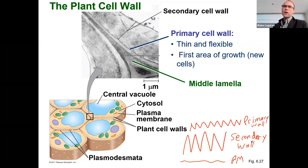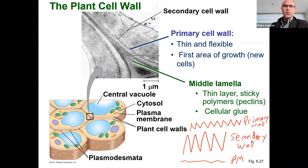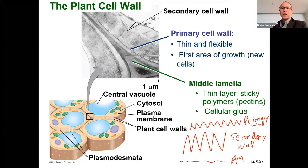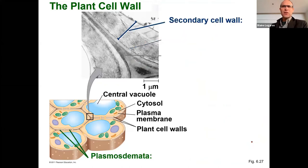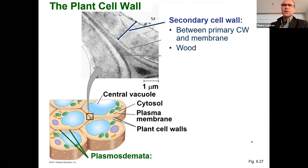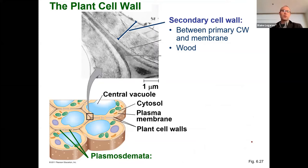The primary cell wall is first — formed during growth, and it's flexible. The middle lamella is the space between cells where two cells are basically glued together. There are pectins in there and a few other glycoproteins that are sticky and hold the cells together. The secondary cell wall sits between the primary cell wall and the membrane, and includes things like wood. Sometimes we see other polymers such as xylose, which is similar to cellulose and found commonly in wood.